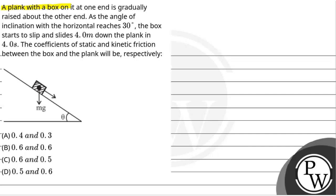The question says that a plank with a box on it at one end is gradually raised about the other end. As the angle of inclination with the horizontal reaches 30 degrees, the box starts to slip and slides 4 meters down the plank in 4 seconds. The coefficient of static and kinetic friction between the box and the plank will be respectively.